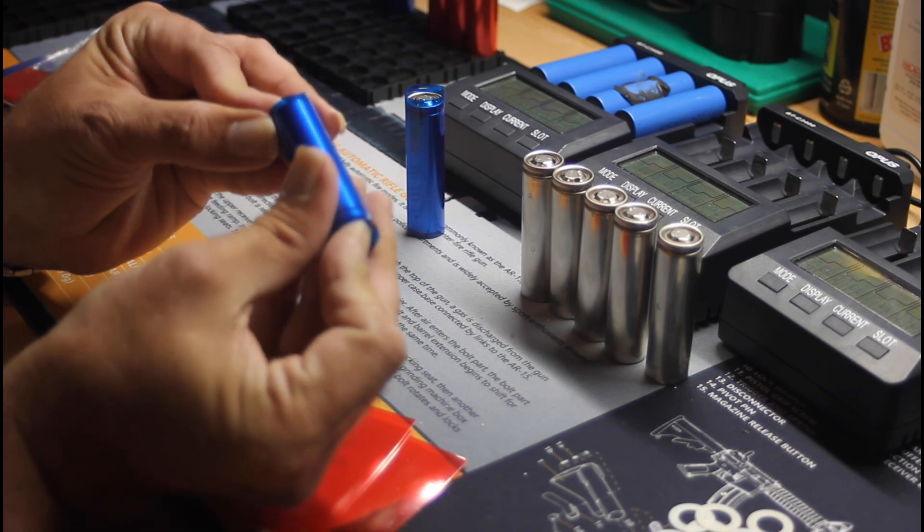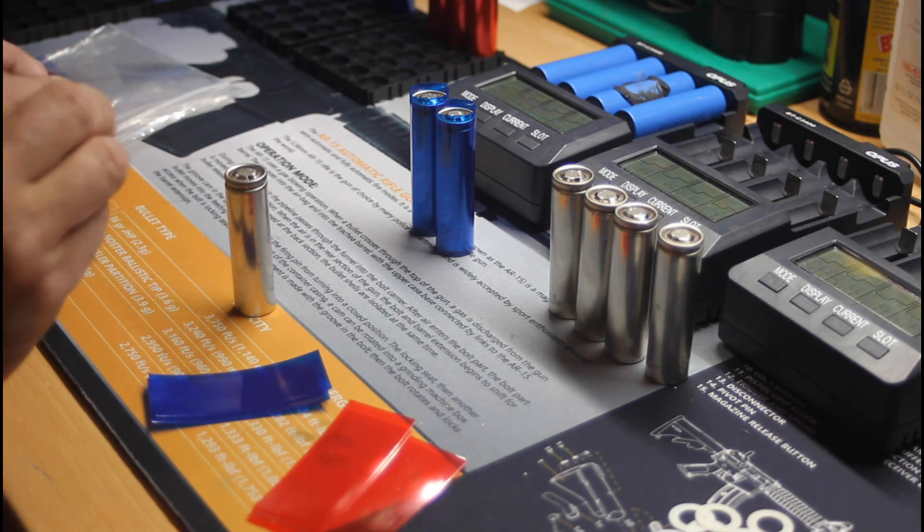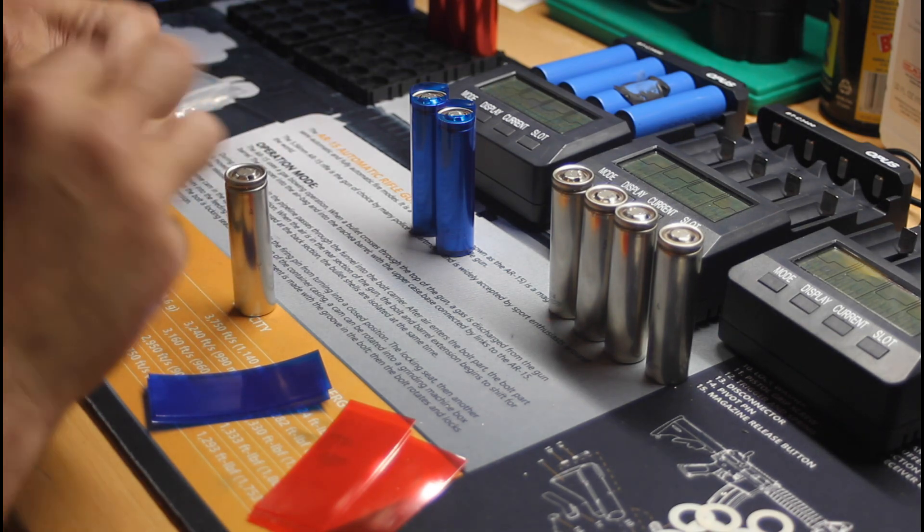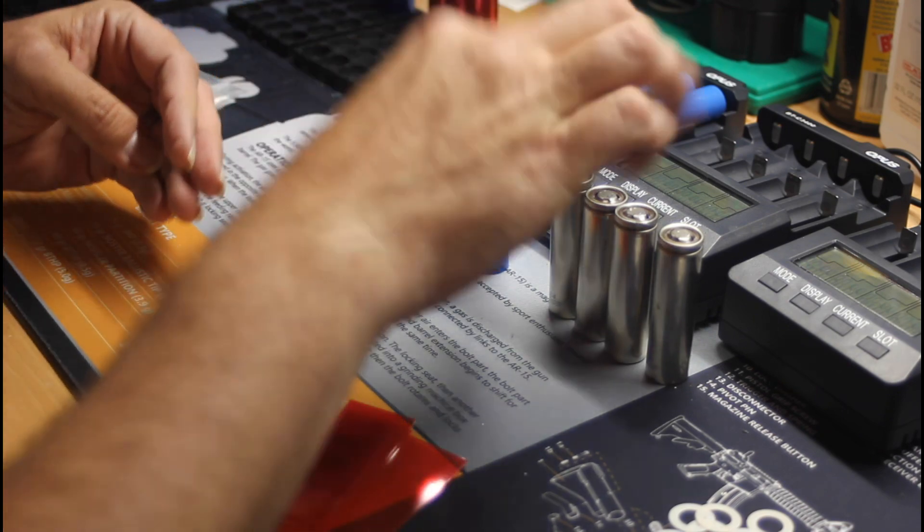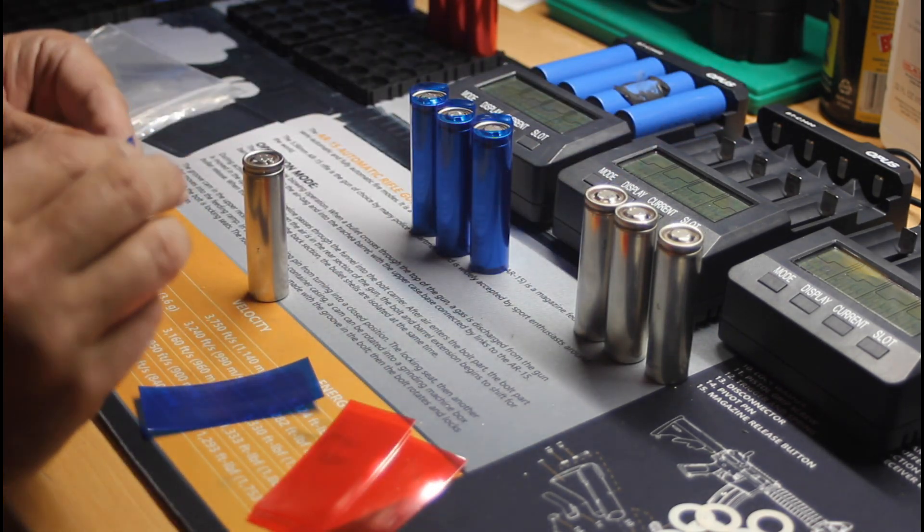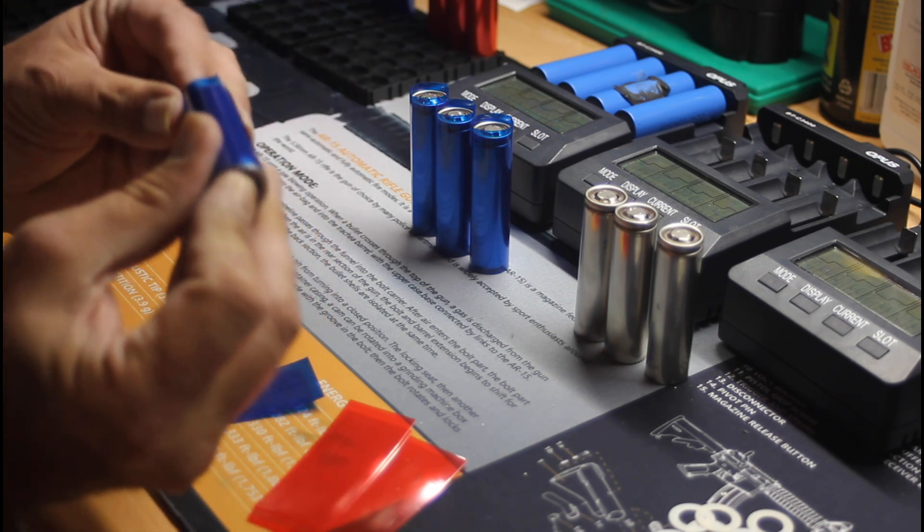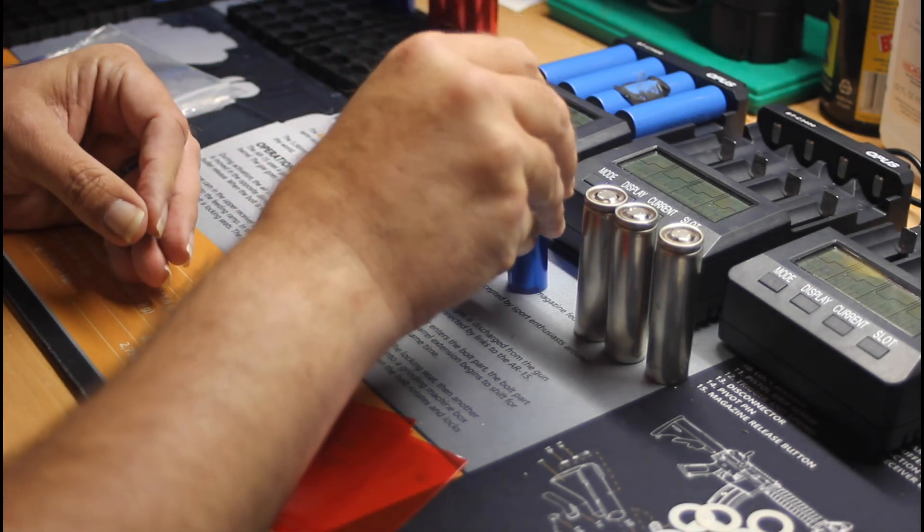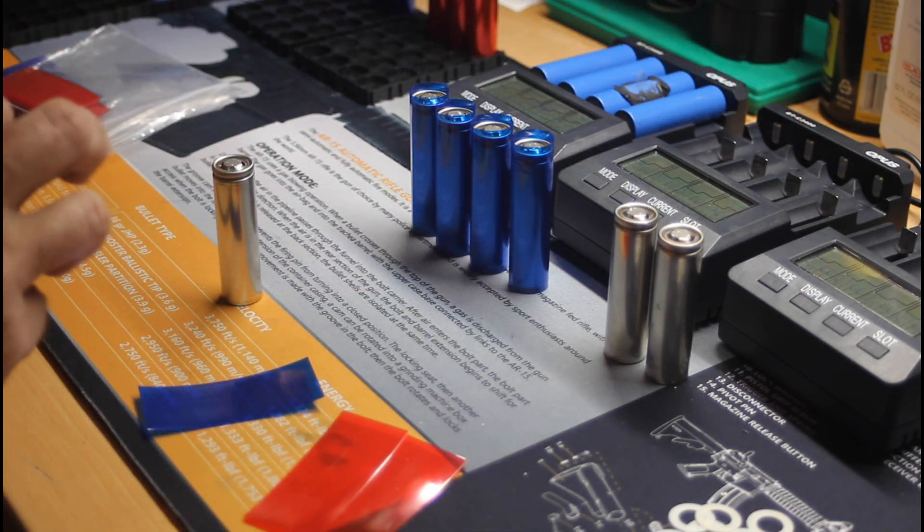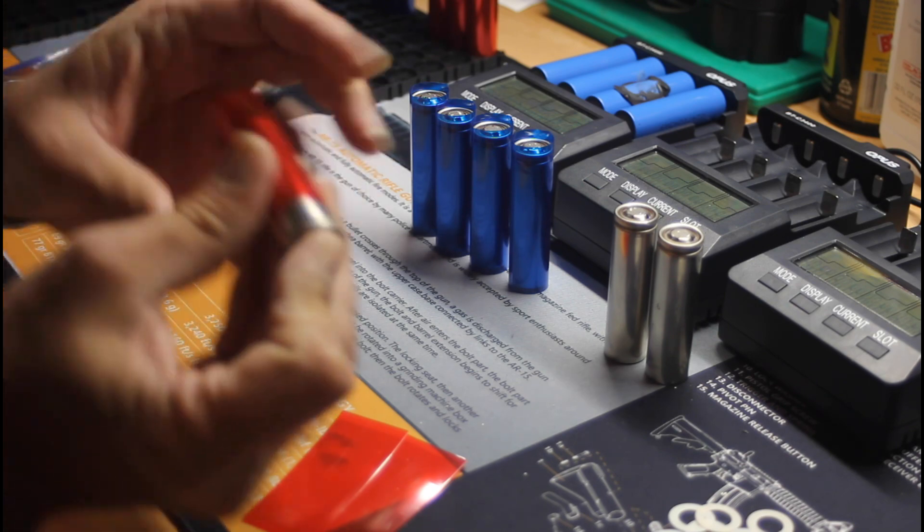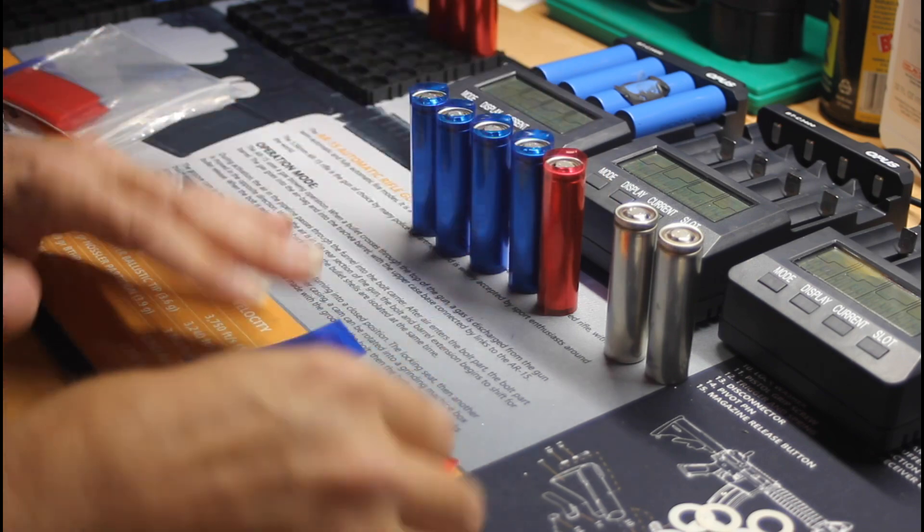I try and do everything in the same step at the same time for a batch of batteries. Again, just slide it in there. Leave about a millimeter or so. And it goes pretty quick. Once you get the hang of it, you'll be able to knock out a bunch of them pretty quickly.